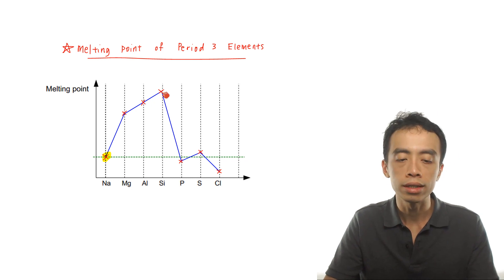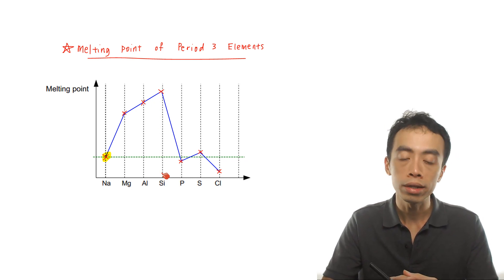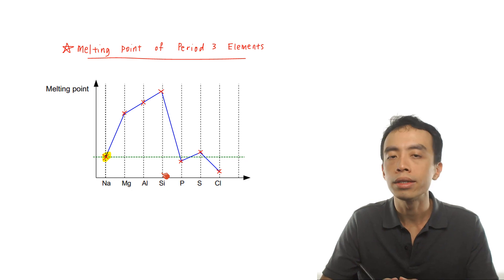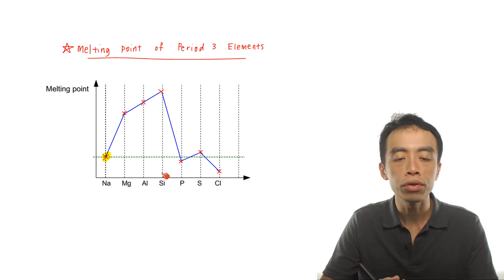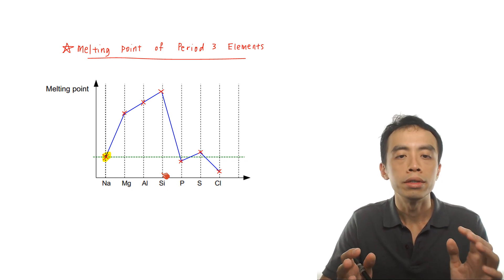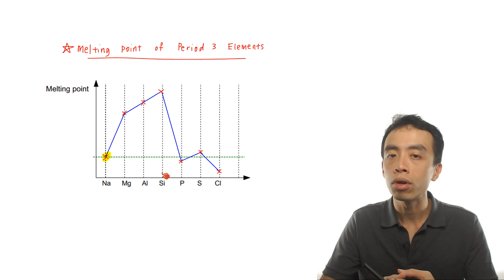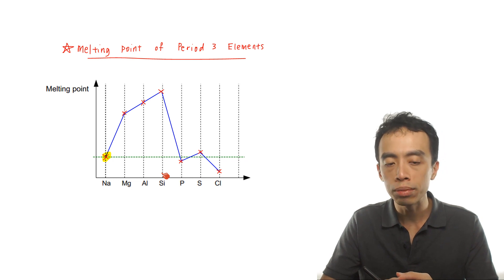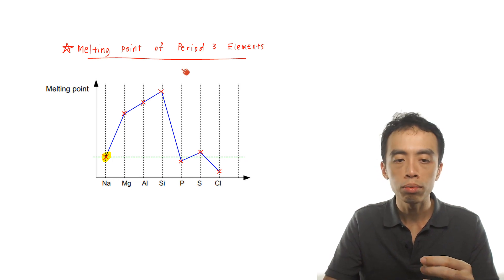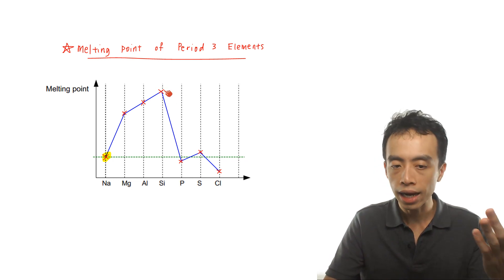Aluminium to silicon — silicon is a non-metal, but it exists as a giant molecule. When we consider the melting point of Period 3 elements, the melting point for silicon happens to be the highest.